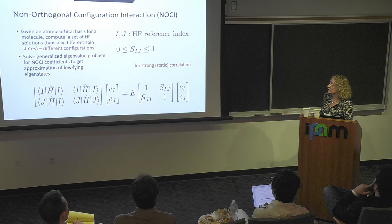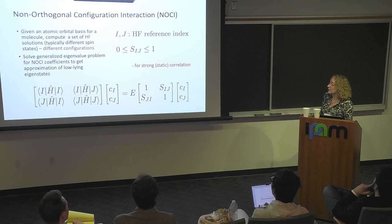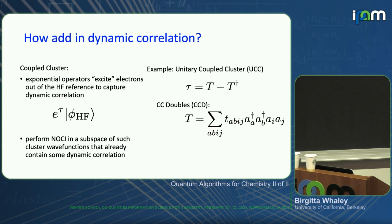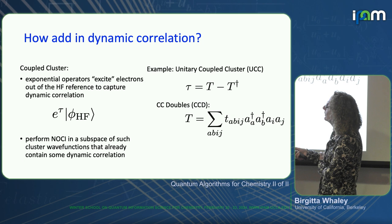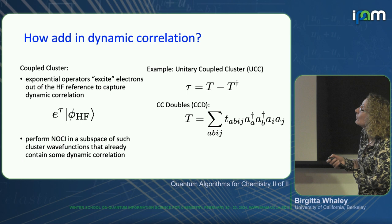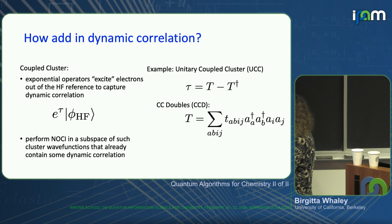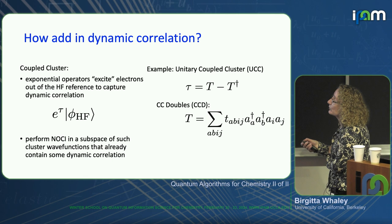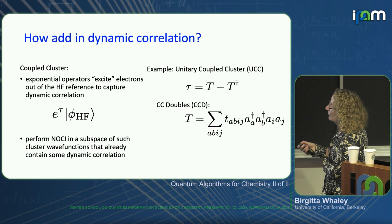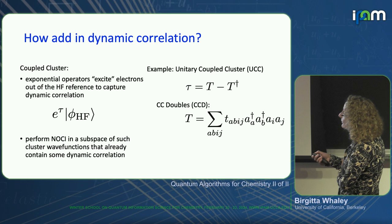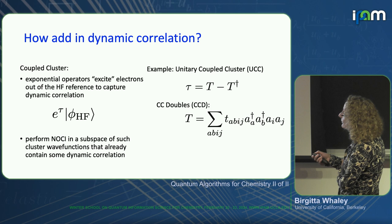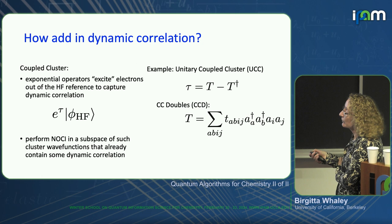To find the energies, we solve this generalized eigenvalue problem rather than the usual eigenvalue problem used with orthonormal basis states. This known method — called NOCI, used by my colleague Martin Head-Gordon for strong static correlation — we want to extend by adding dynamic correlation. Why not add our exponential operators that are good at capturing weak correlations? We operate on each Hartree-Fock state with a unitary coupled cluster operator.